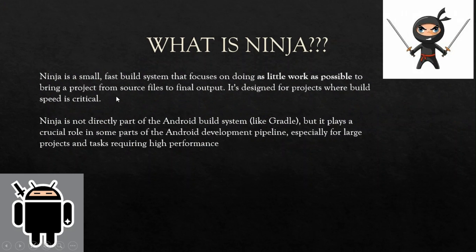To begin with, what is Ninja? Ninja is a small, fast build system that focuses on doing as little work as possible to bring a project from source files to final output. We all know the Android build system is vast — there will be thousands of files. These source files have to be brought to the final output, be it in the form of APK or system images which can be flashed on your device. This work is done by Ninja. It's designed for projects where build speed is very critical.